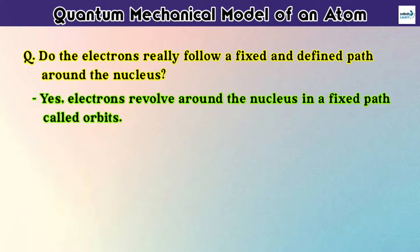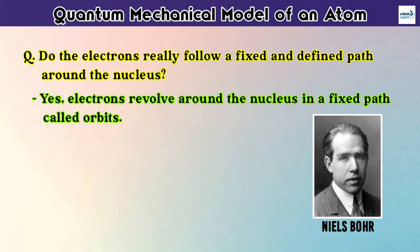And you already know that this theory was given by Niels Bohr. But we can't say that the position of electrons is the same or not, because electrons continuously revolve around the nucleus. And that's why the exact position of the electrons cannot be found easily.